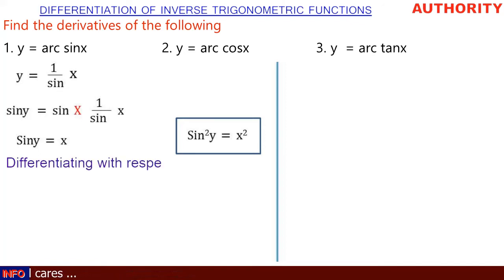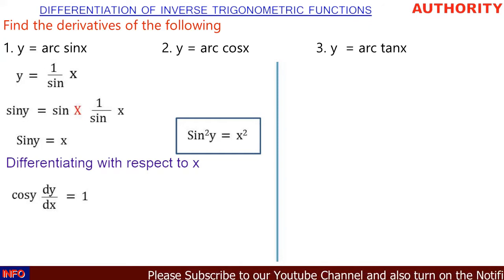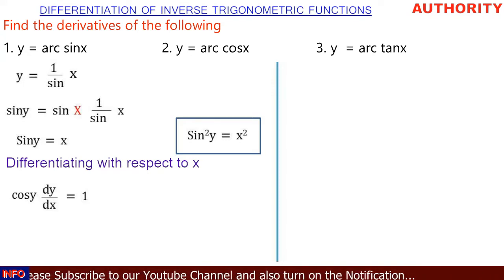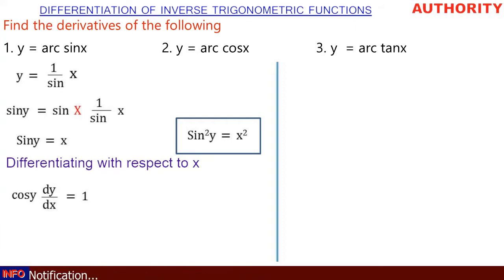Now let's differentiate sin(y) equals x with respect to x. Normally, the derivative of sin(x) is cos(x). But here we are differentiating sin(y) with respect to x, so we get cos(y) · dy/dx. The derivative of x gives us one, so: cos(y) · dy/dx = 1.